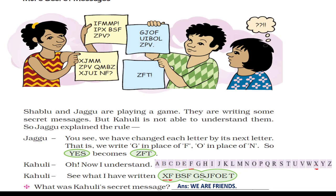To decode this, we write the previous letter. Before X in the alphabet we have W, and before F we have E. So in place of X we write W, and in place of F we write E. Next, B becomes A, S becomes R, and F again becomes E. When you decode the full message, you get 'we are friends' — that is the secret message.